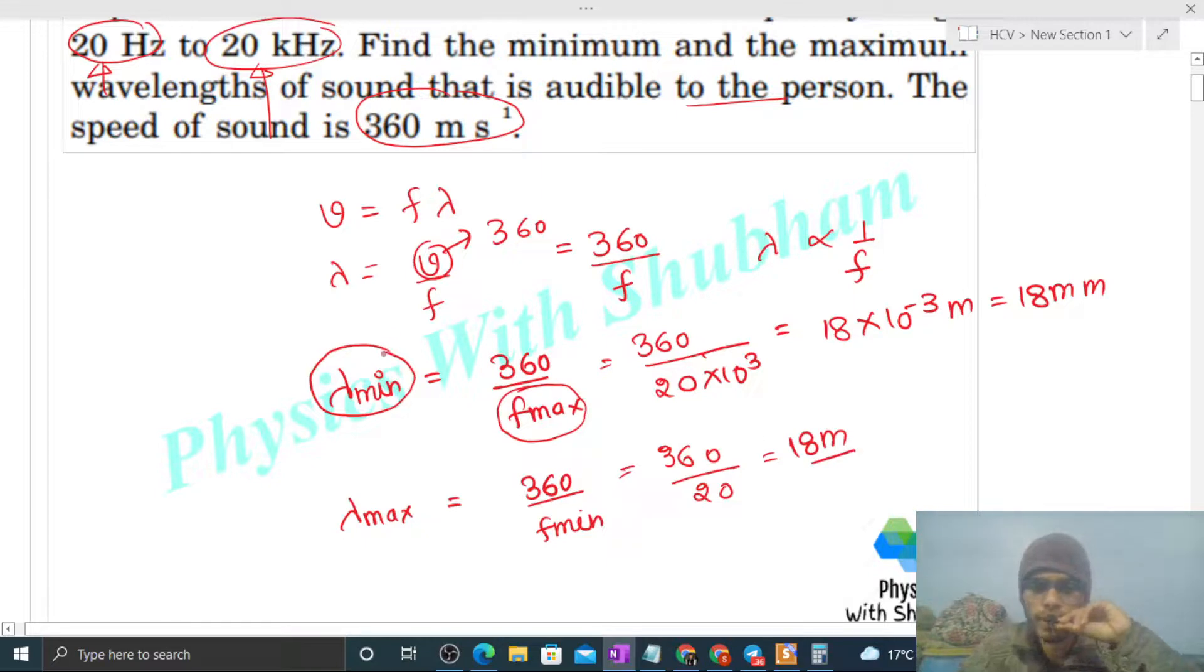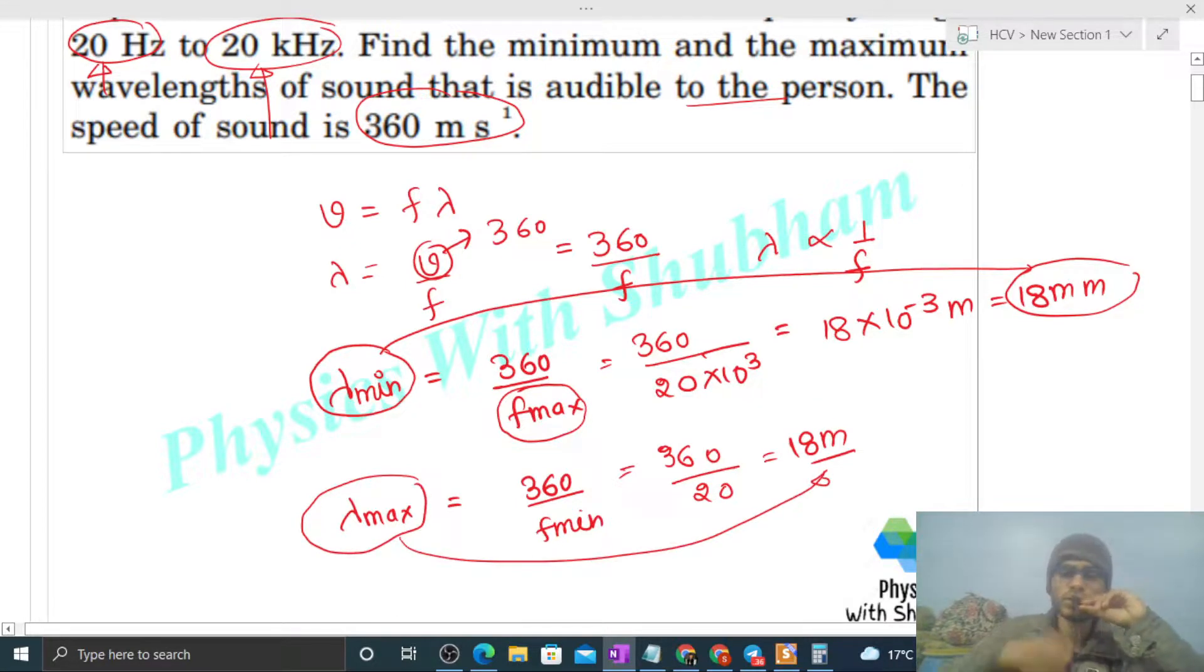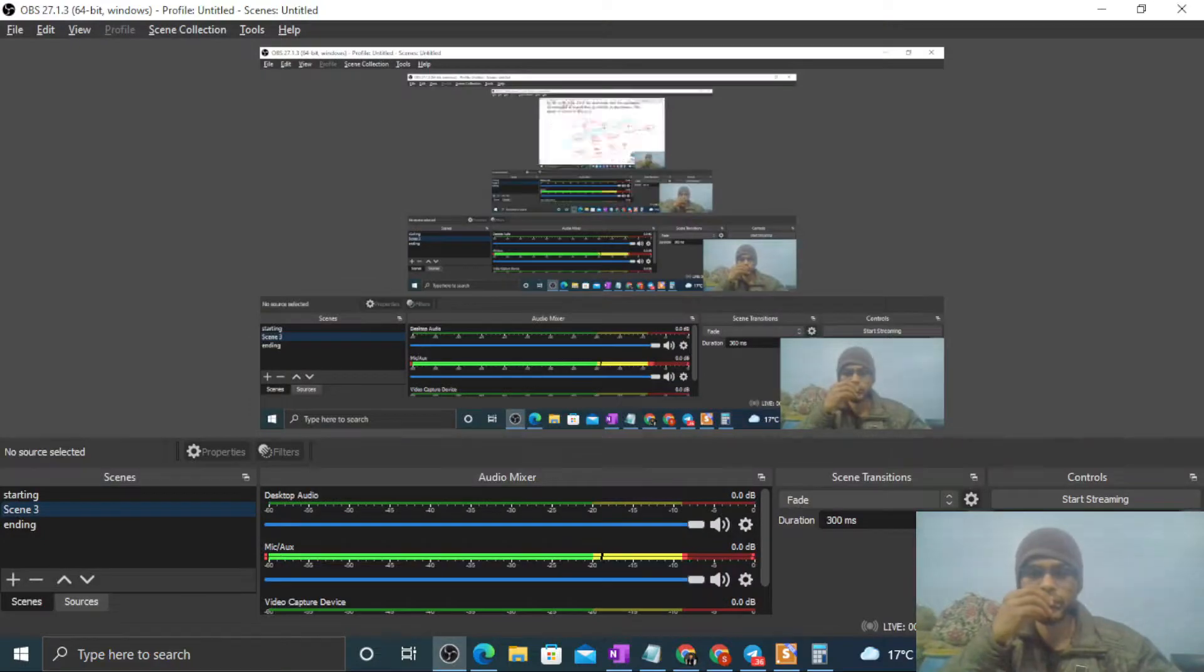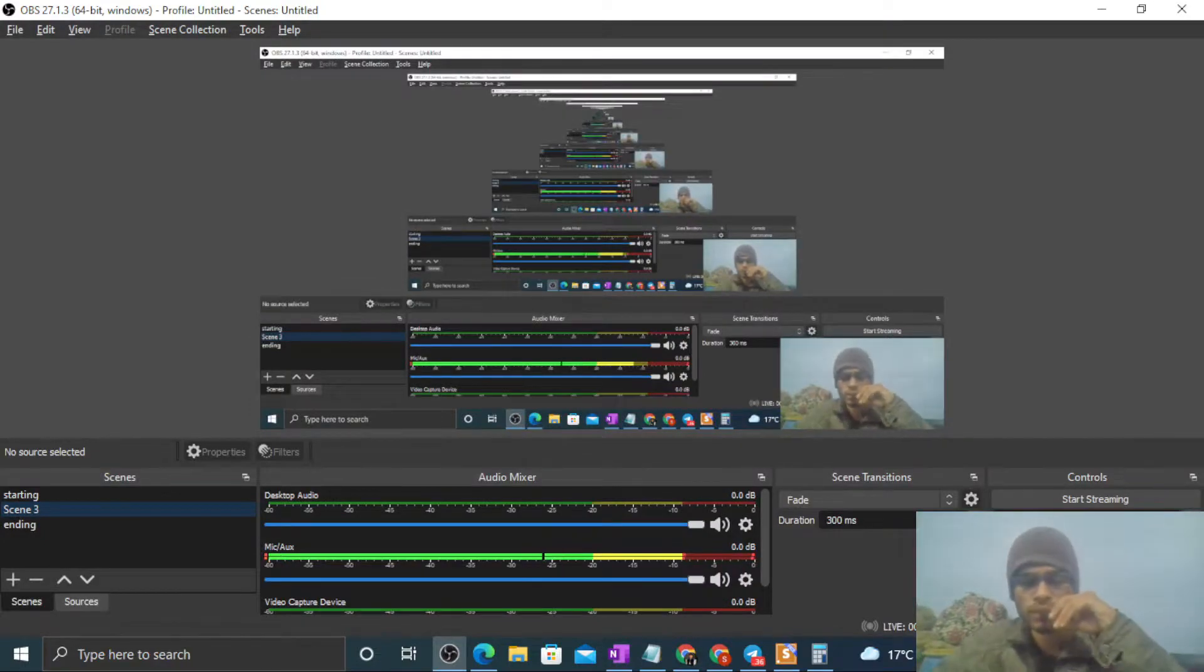Right, minimum wavelength that is audible is 18 mm and maximum wavelength that is audible is 18 meter. So I think you have understood. Let me know if you still have any confusion. Okay, let's keep working hard. Wishing you best of luck. Bye.